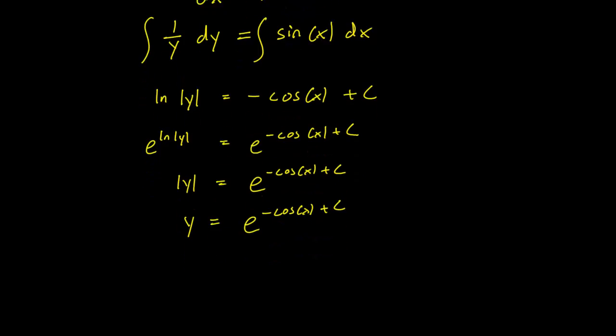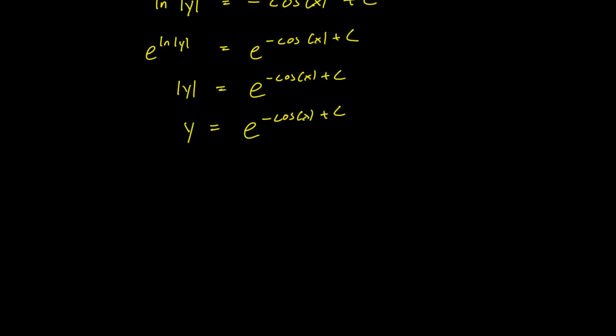This is going to be our general solution. Sometimes it's going to be easier to figure out the parameter if we write it differently. We often want to write it down as k equals e to the c instead, in which case we can write down the general solution like so.